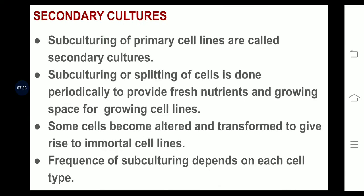Secondary cultures: subculturing of primary cell lines is called secondary cultures. Subculturing or splitting of cells is done periodically to provide fresh nutrients and growing space for the growing cell lines. Some cells become altered and transformed to give rise to immortal cell lines. The frequency of subculturing depends on each cell type — for example, adrenal cell lines will be different from liver cell lines, which will be different from neuronal cell lines.